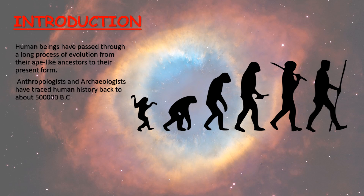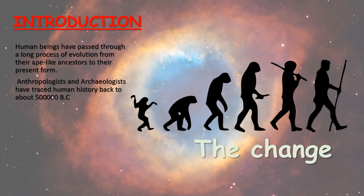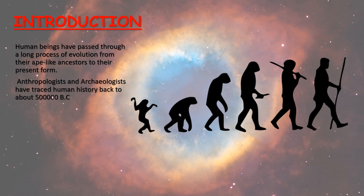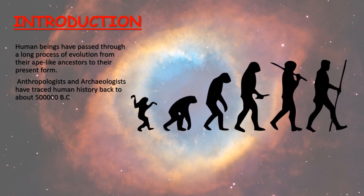What is evolution? Evolution means the change that human beings have gone through. Children, if you look at this picture from left to right, you will see we have evolved from ape-like ancestors to the present form. We are now able to walk straight and are known as Homo erectus. We also have the ability to think, and therefore we are known as Homo sapiens.